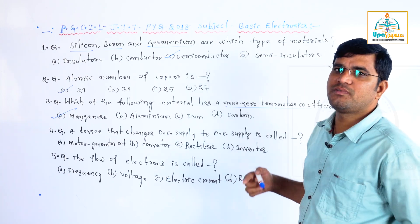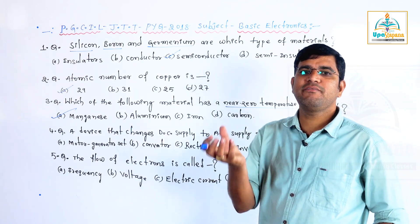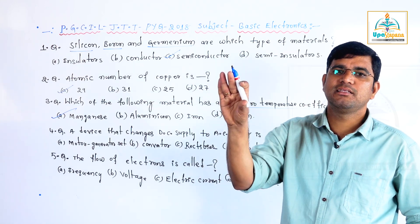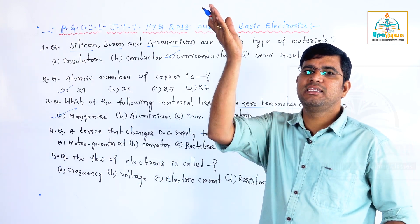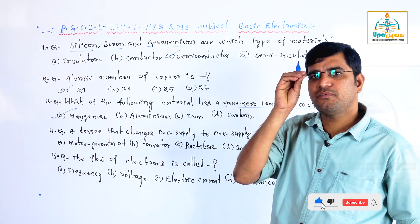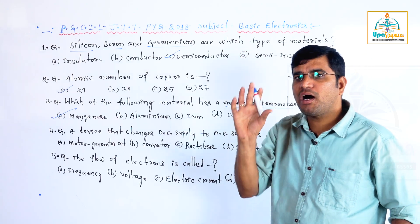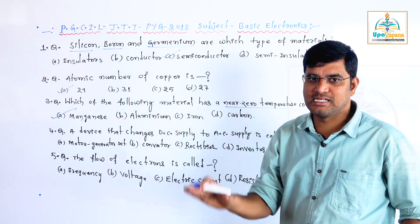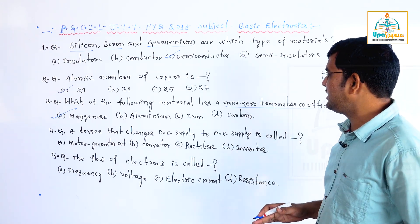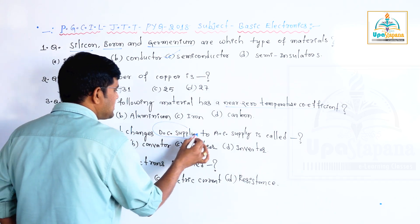What is positive temperature coefficient? PTC — as temperature increases, resistance increases. What is negative temperature coefficient? NTC — as temperature increases, the resistance goes lower. So for negative temperature coefficient materials, as temperature increases, resistance decreases.